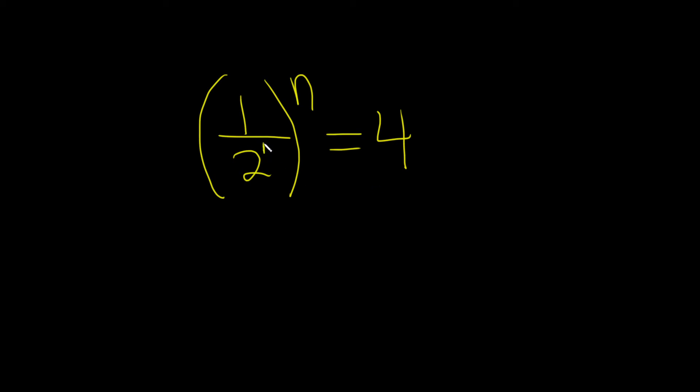This is really 1 over 2 to the 1. So if we bring it upstairs, it's 2 to the negative 1 parentheses to the n. This is equal to 4, which is 2 to the 2.